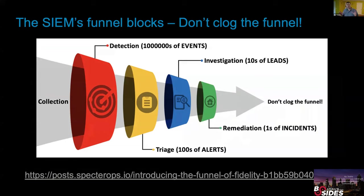This is how I look at building a SIEM — through a funnel. This diagram is taken from a post by Jared Atkinson at Specter Ops. The idea is that when we build the SIEM, we need to go through a filtering process. We don't want to clog the funnel — we don't want to end up with more alerts than our team can handle. We'll go one by one through those steps and see which tools can help.